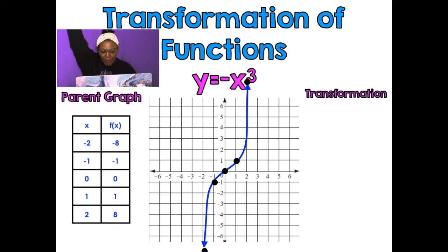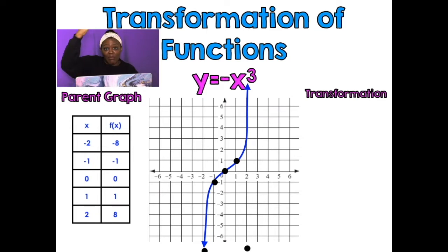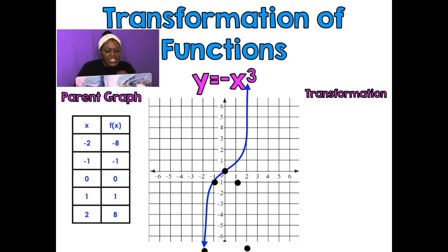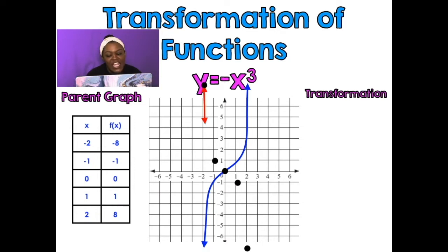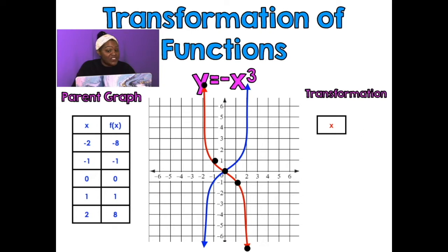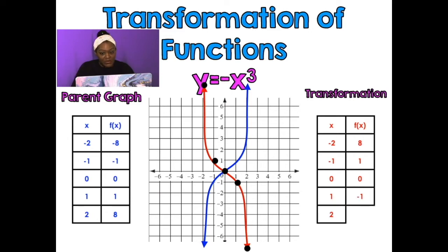That top point is 8 spaces above the X-axis, so to reflect it I'm going to move it 8 spaces below. The point 1, 1 is 1 space above the X-axis, so I'm going to move it 1 space below. The middle point is on the X-axis, so I leave it there. Negative 1, negative 1 is below the X-axis, so I move it 1 space above. And negative 2, negative 8 is 8 spaces below, so I move it up. We have a reflection across the X-axis. When making a table, you're only changing the Y values — if they were negative they become positive, if they were positive they become negative.